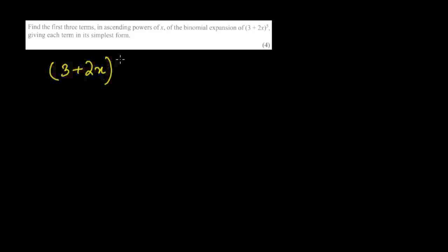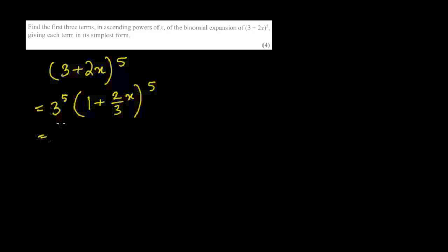This is a binomial series question: (3 + 2x)^5. We need to expand up to the first three terms, which means up to x squared. A common mistake is to go up to x cubed — it's not. Take 3 common, so the expression becomes 3^5 times (1 + (2/3)x)^5. Another common mistake is to take 3 common but not write the power. 3^5 is 243.